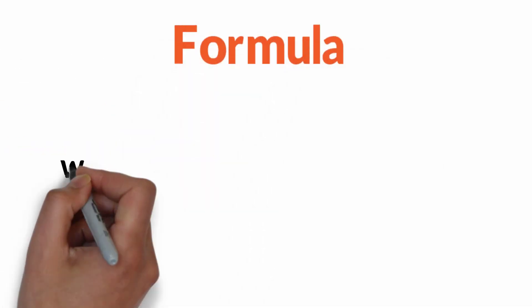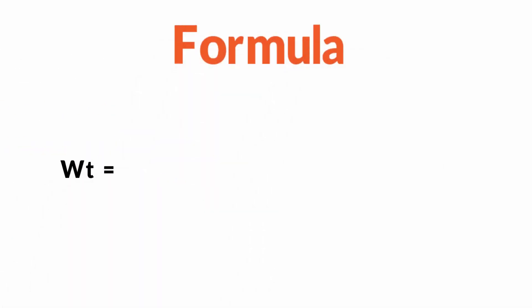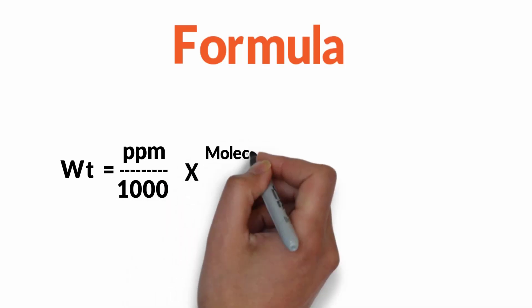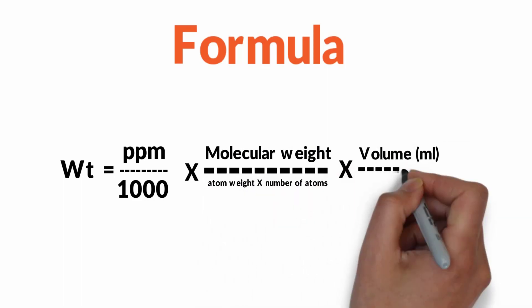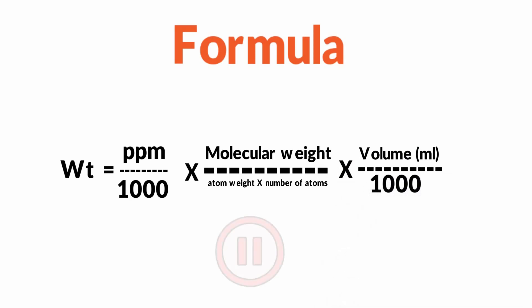Now you can use this formula to prepare your standard solutions. The weight equals the ppm divided by 1000, times the molecular weight of the compound you need to prepare your standard solution from, divided by the molecular weight of the atom you need to prepare, times how many atoms in that chemical formula, times the volume divided by 1000.